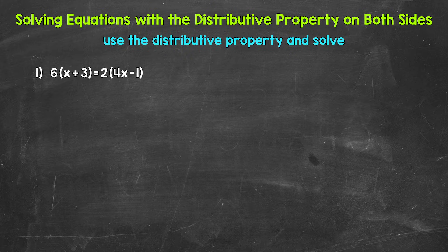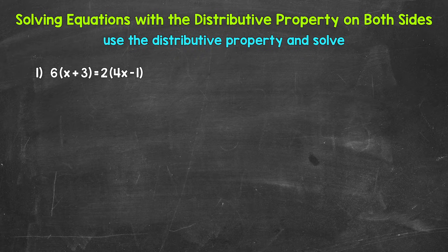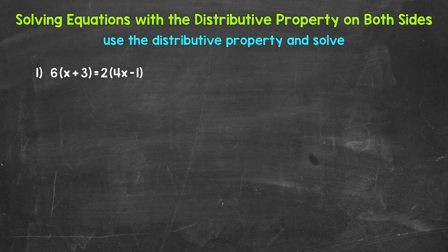Let's jump into number one, where we have 6(x + 3) = 2(4x − 1). We need to figure out what x equals. Since we have parentheses, let's remove them by using the distributive property — that's the first thing we're going to do.